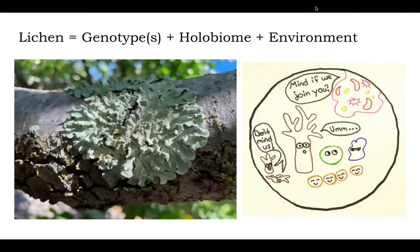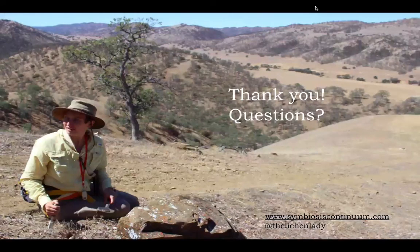I want to end with this idea that we need to redefine lichens, specifically if we want to understand the lichenized phenotype and really understand the lichen symbiosis more generally. It's not enough to just look at the two main partners in isolation. Lichens really make a good case study for other interkingdom interaction studies — we need to consider the genotype, or rather genotypes, the whole holobiome, and the environment when looking at what mechanisms are driving symbiosis and what role symbiosis plays in ecology and evolution. Thank you so much for your time, and I will happily take any questions here, or you can follow up with me later in the conference or on Twitter at the lichen lady.